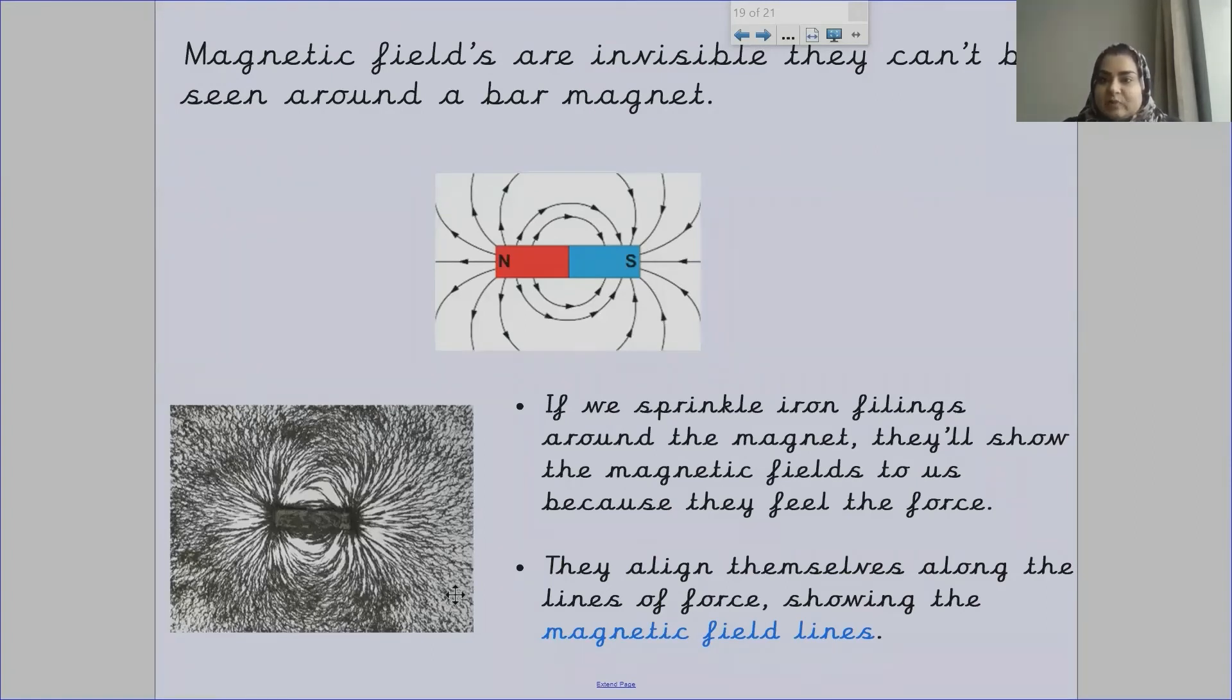Magnetic fields are invisible. They can't be seen around a bar magnet. Do you remember I explained to you earlier on that magnetic fields are invisible? Whenever you see a magnet, you will never see magnetic fields around it visibly because they are invisible.